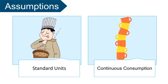Moving on to the basic assumptions of the Law of Diminishing Marginal Utility. The first assumption is standard units: the law applies when there is consumption of standard units, meaning one cup of tea, not one spoon of tea. The second assumption is that there has to be continuous consumption of the commodity. For example, if a cup of coffee is consumed today and another is consumed tomorrow, this won't be regarded as continuous consumption.